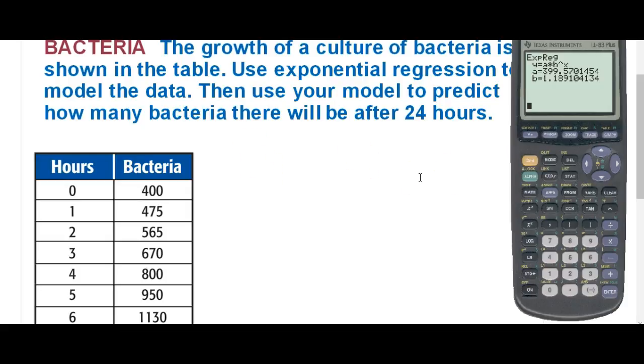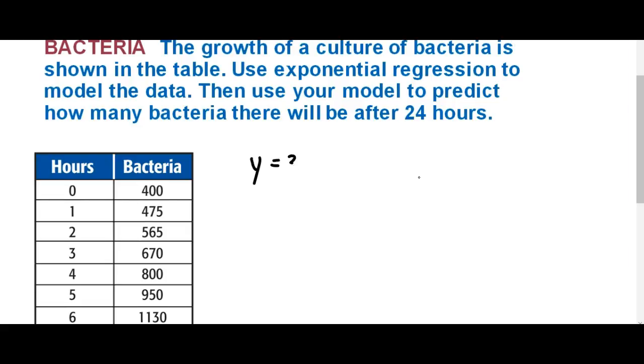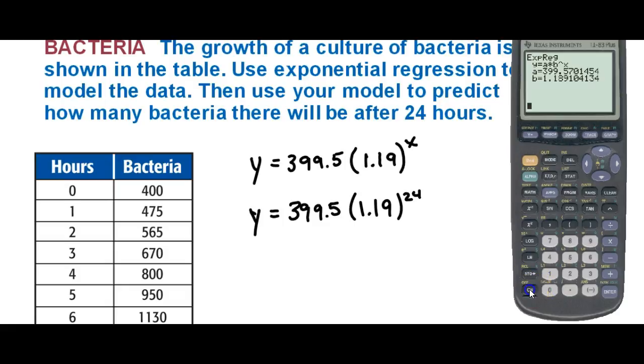So, that can be our model. We have y equals 399.5 times 1.19 to the x power. Now I want to predict how many bacteria there will be after 24 hours. We could say y equals 399.5 times 1.19 to the 24th power. And when we do that, we would get 25,980.